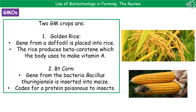The second example is Bt corn. What we've done here is taken a gene from the bacteria Bacillus thuringiensis and inserted it into maize. This codes for a protein that is poisonous to insects, so if the insects try to feed on the corn, they will die as a result. You can see at the bottom right the difference between the non-Bt corn at the bottom and the Bt corn above it.